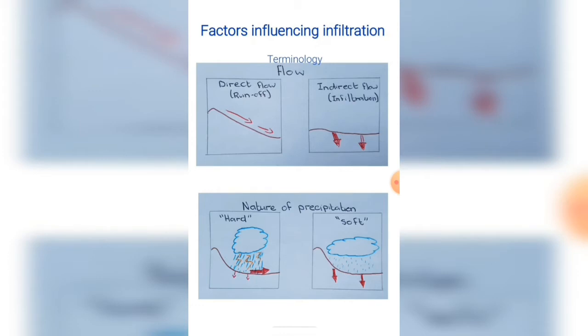Direct flow, otherwise known as runoff, is the amount of water that runs over the surface of the ground, so none of it soaks into the ground. Indirect flow or infiltration is the amount of water that soaks into the soil.